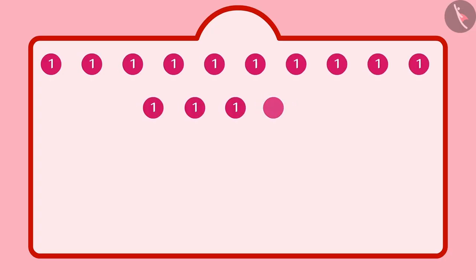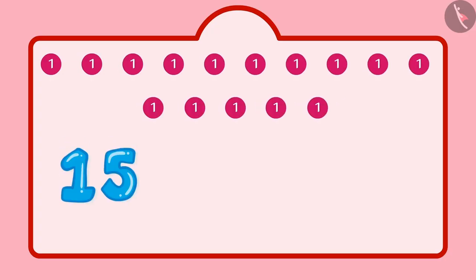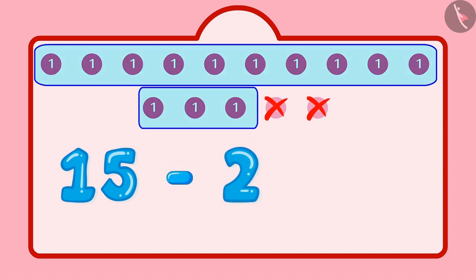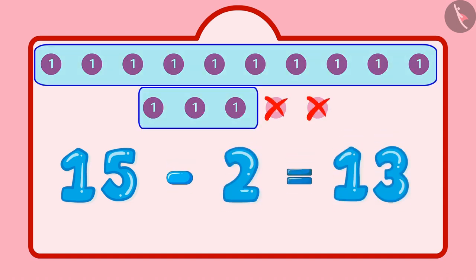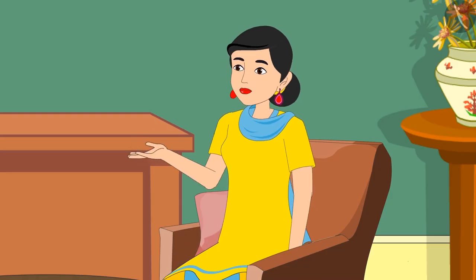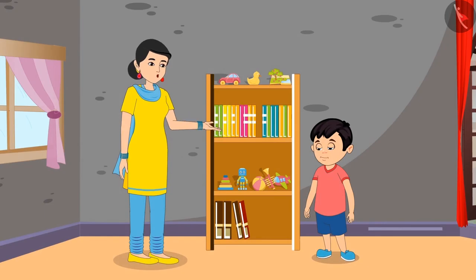Chotu works it out: 'The paper was of 15 marks in total, then I subtracted two marks from it. Mommy, I got 13 marks in total!' Mother responds, 'Well done, very good Chotu!'